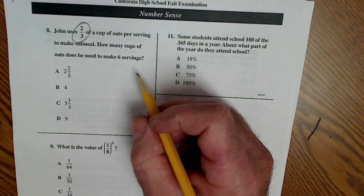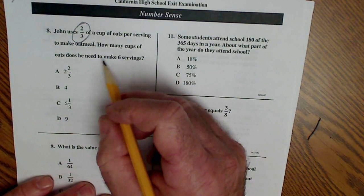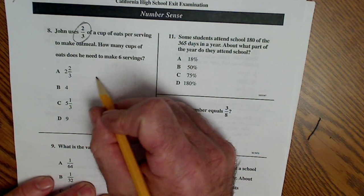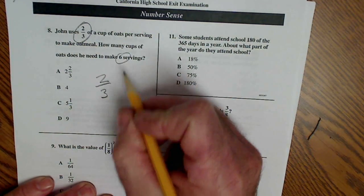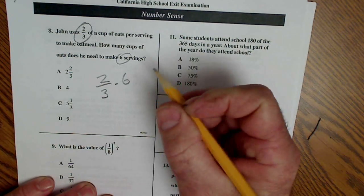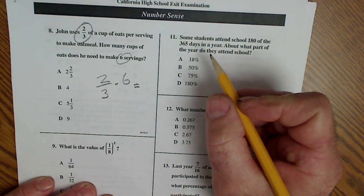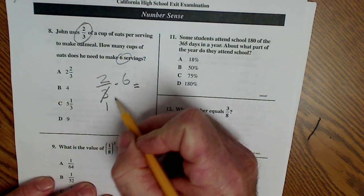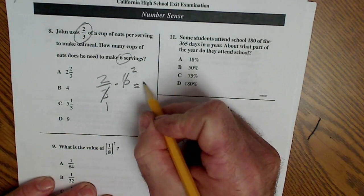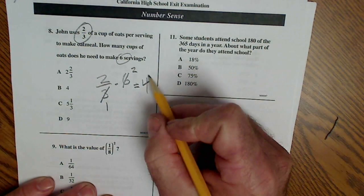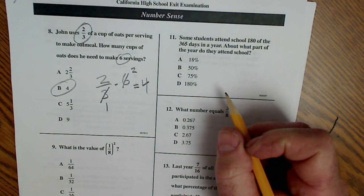This is a high school exit exam. This first problem is fractions, one of our essentials. He uses two-thirds of a cup of oats, and he makes six servings. So I'm going to do two-thirds times six. Before I multiply, I want to reduce. Three goes into here once, and here twice, and I get four. So my answer is four. Then I want to make sure I clearly bubble it in.